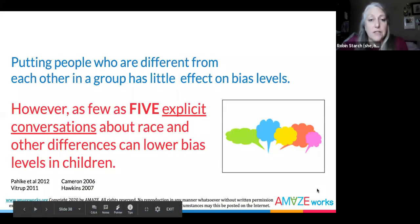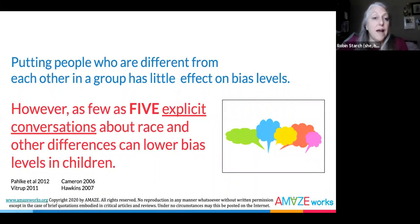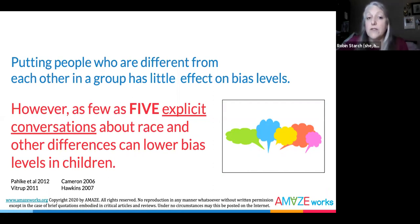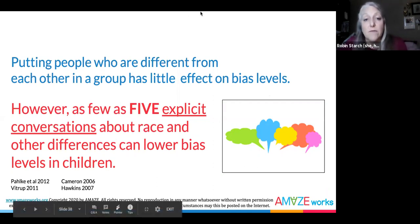The ability to notice, name, and reject bias develops once we better see, understand, and appreciate each other's differences. It is crucial that we help children name and unpack the biased messages so prevalent in our society. Avoidance of talking about race and other differences does not keep children from developing biases. In fact, the opposite is true. Research shows that as few as five explicit conversations about race and other differences lowers bias levels in children.